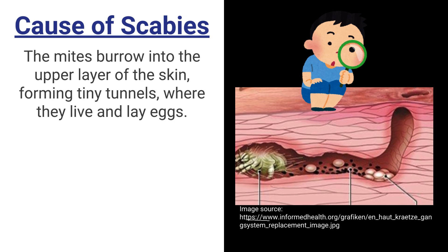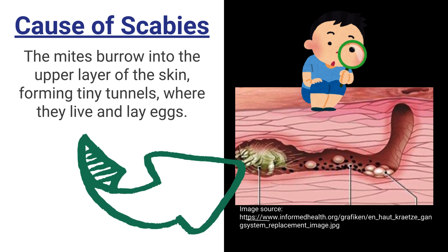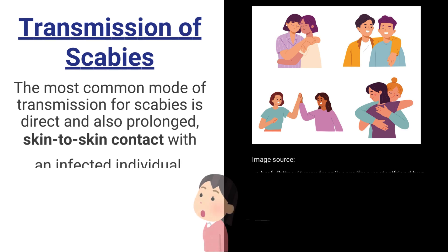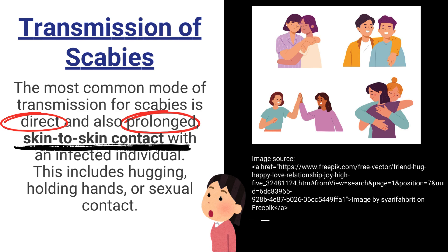The mites burrow into the upper layer of the skin, forming tiny tunnels where they live and lay eggs. The most common mode of transmission for scabies is direct and prolonged skin-to-skin contact with an infected individual, because it takes time for the mites to change their hosts, so long-term contact is needed.